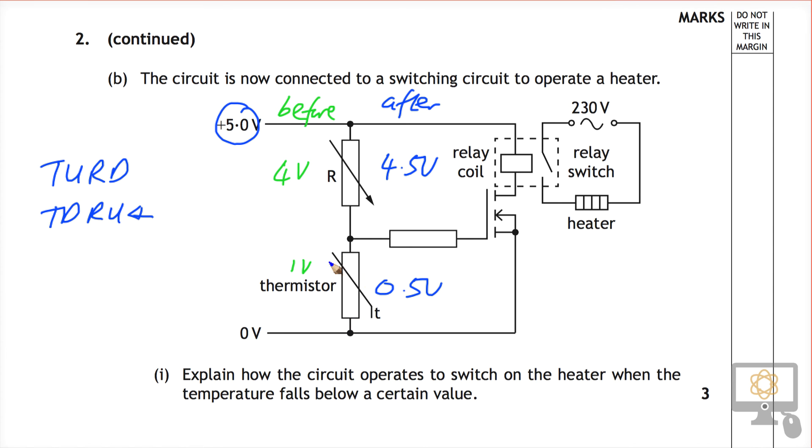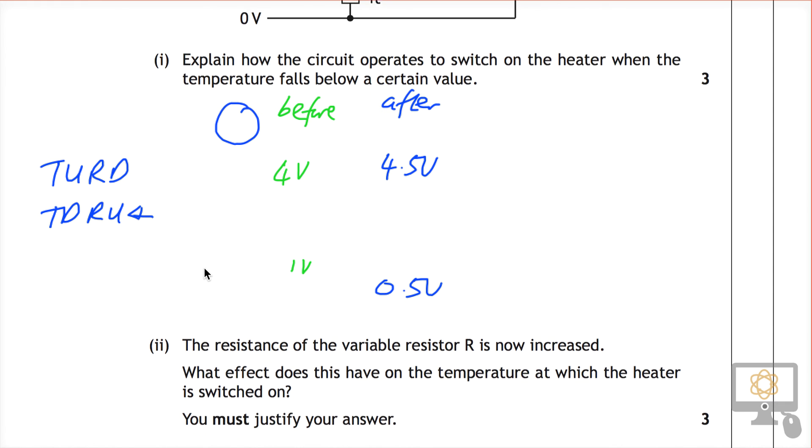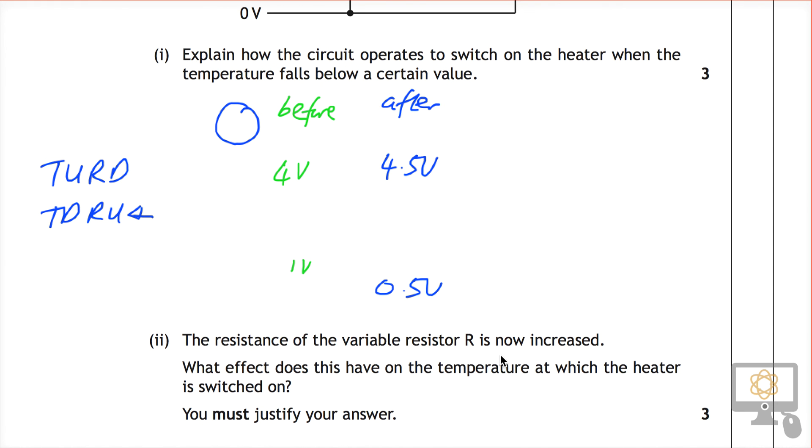So the resistance needs to go up even more than it did before. And so because the resistance needs to go up even more than it did before, the temperature needs to decrease even more than it did before. So going back and having a look at the question, the resistance of the variable resistor is increased. What effect does this have on the temperature at which the heater is switched on? The temperature needs to be even lower. It needs to decrease compared to what it did before.